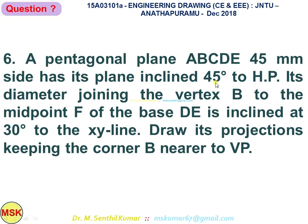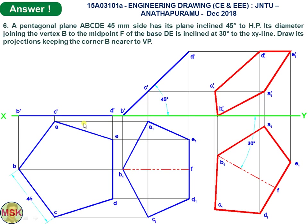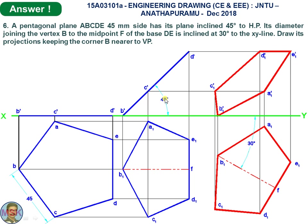In the top view draw the pentagon with edge ED on the XY line. This gives the initial top view and initial front view. For the second front view, tilt the B'-D' line such that it is inclined at 45 degrees to HP. After tilting, draw projectors and horizontal lines to get the second top view. Now read: the diameter B to midpoint F of DE must be inclined at 30 degrees to XY.